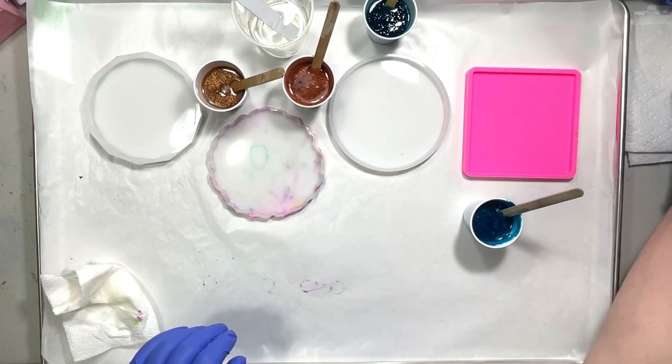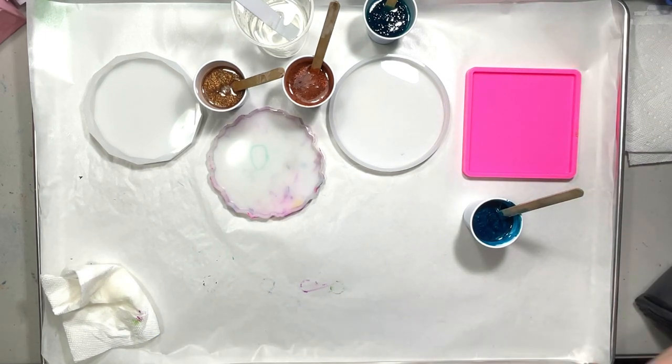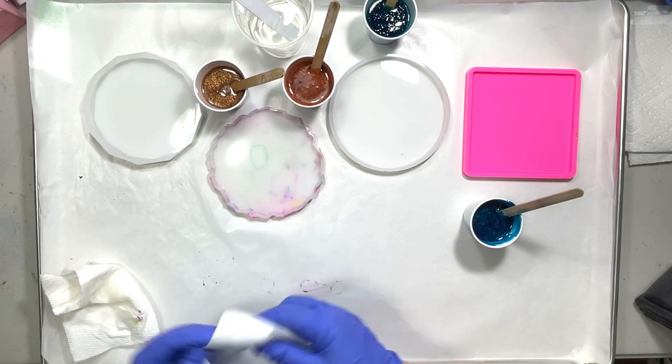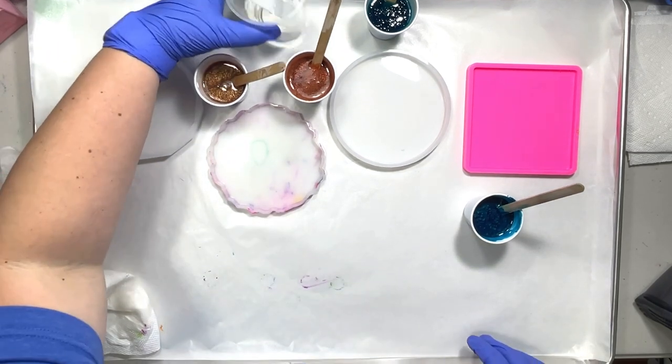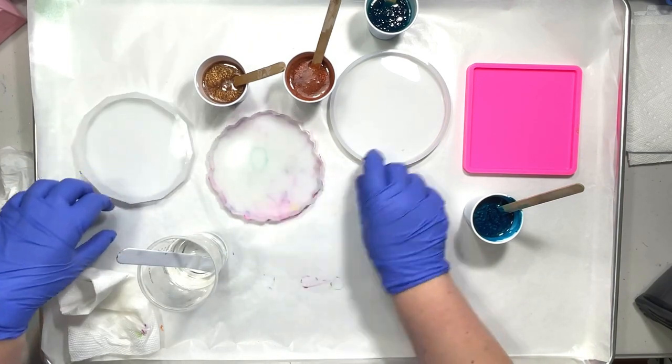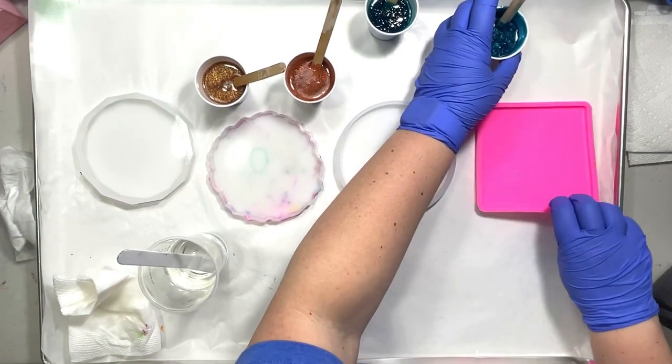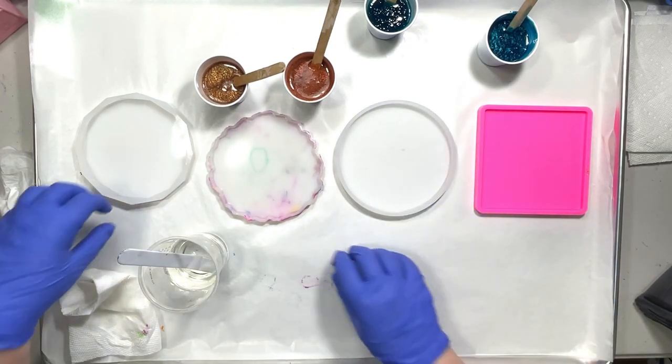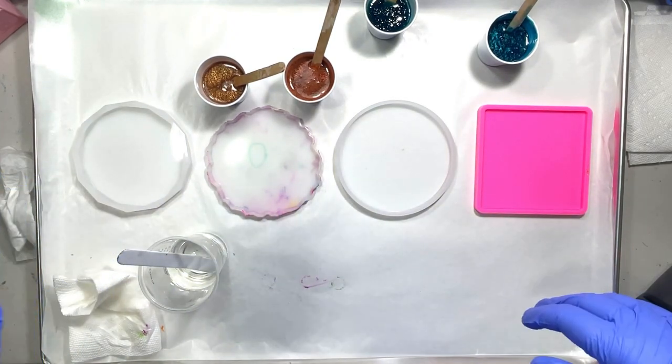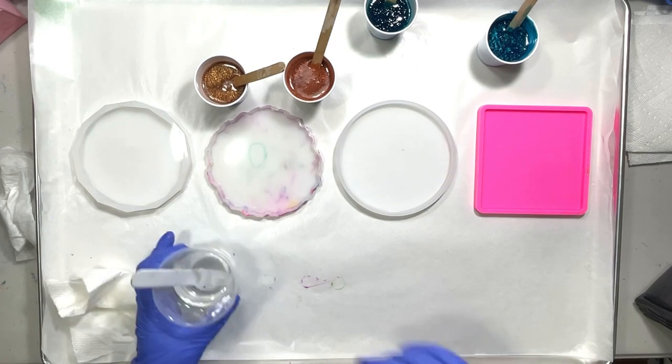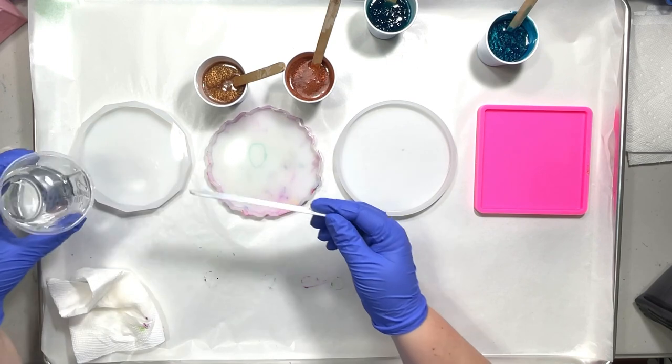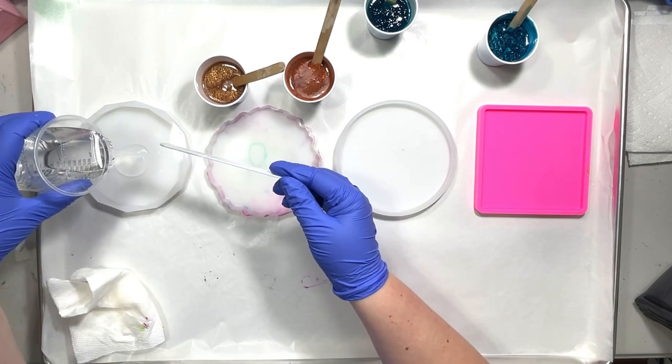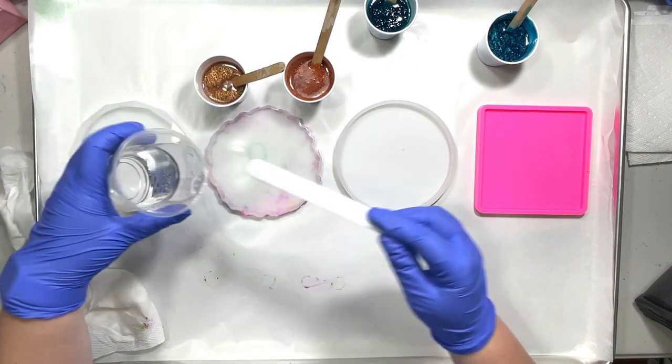I always get resin all over myself. Okay, all right, so I'm going to start with the clear. Make sure you guys can still see. Okay, cool. All right, so I'm just going to put about one ounce of clear in each of these, trying to do it centered.